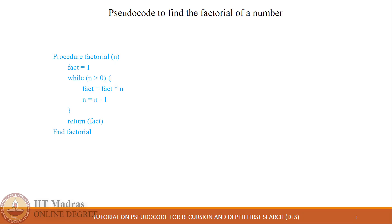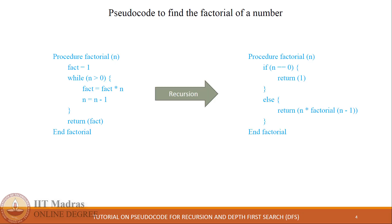Now let's see how to convert this existing procedure into its equivalent recursive procedure. Computing a factorial is a mathematical process where there is a base condition which says if we reach 0 we should stop, and factorial of 0 is 1. Therefore we have added that as an if condition which says if n equals 0, return 1.